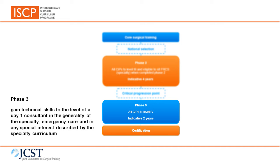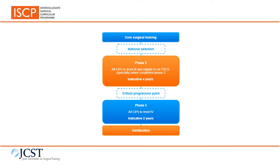The outcome of phase three is to have gained all the capabilities necessary for safe practice as a day one consultant. As knowledge, clinical and professional skills have been developed to the level of a day one consultant as part of the outcome for phase two, phase three allows development of technical skills to the level of a day one consultant in the generality of the specialty, emergency care, and in any special interest described by the specialty curriculum. Once these capabilities have been achieved, an ARCP outcome 6 may be awarded and the trainee can apply for CCT. Please consult your own specialty curriculum for specific details as they may differ slightly from this general overview.